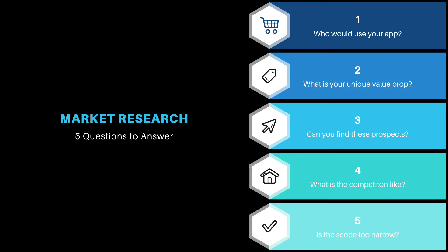Number two: a unique value proposition. You need to really understand and be able to communicate what makes your product unique — what is the thing that sets it apart from competitors? This may change over time, but you need to always have that as your main point in all of your marketing. Number three: are your prospects findable? If you make a product for people that are so niche or so hard to get to, if you have no way of getting in front of them, how are you going to keep this product viable?